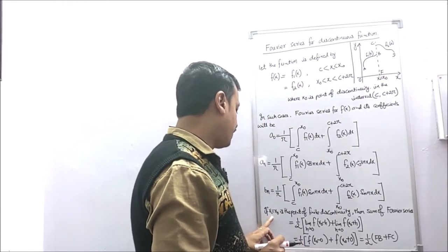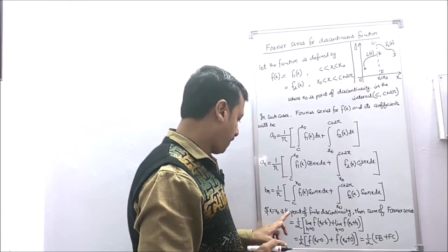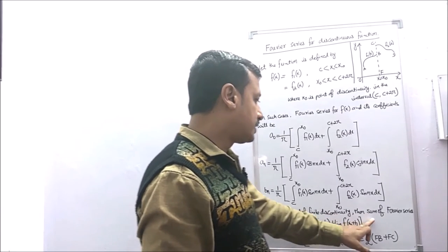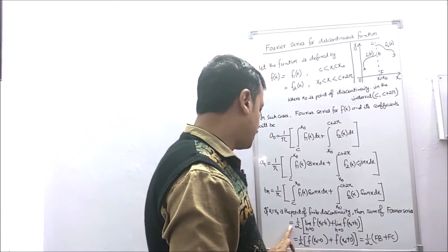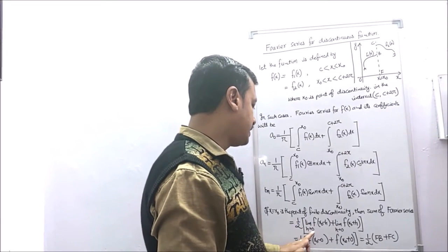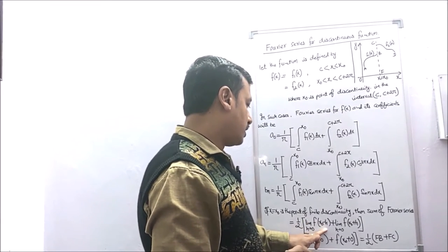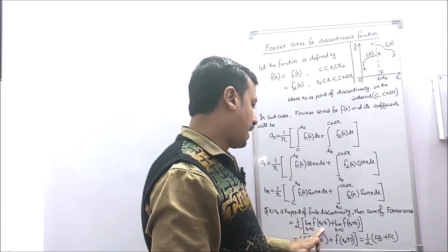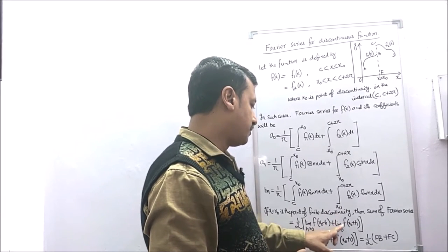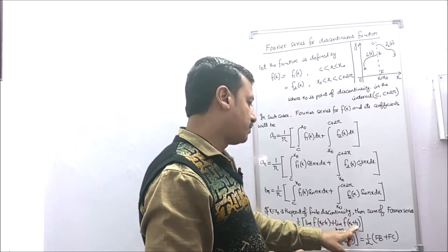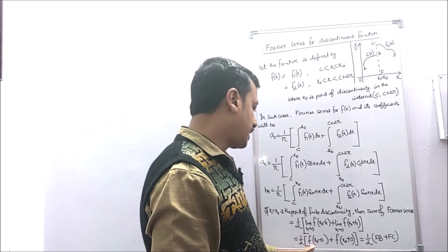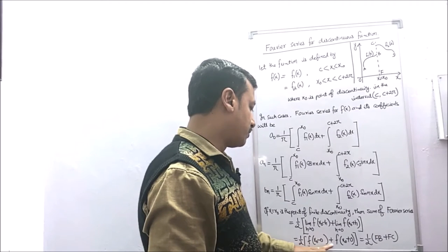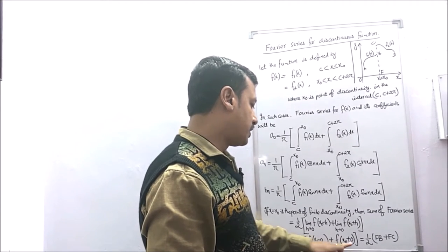If x equals x0 is a point of finite discontinuity, then the sum of the Fourier series is equal to half the limit as h tends to 0 of the left-hand limit plus the right-hand limit, that is f(x0 − h) + f(x0 + h). This can be written as (1/2)[f(x0 − 0) + f(x0 + 0)].